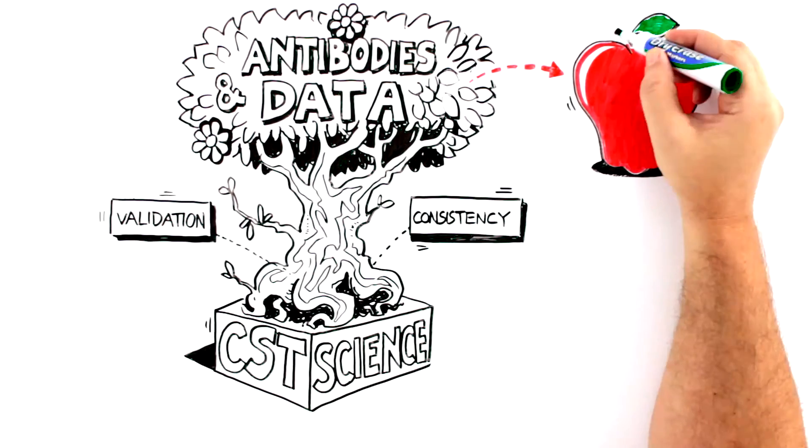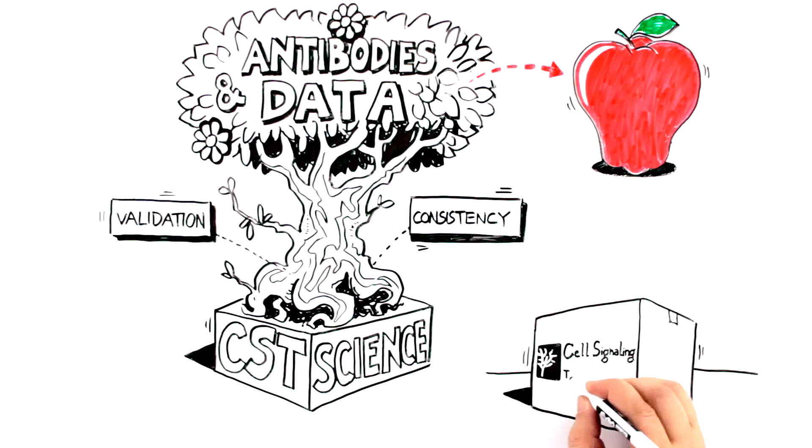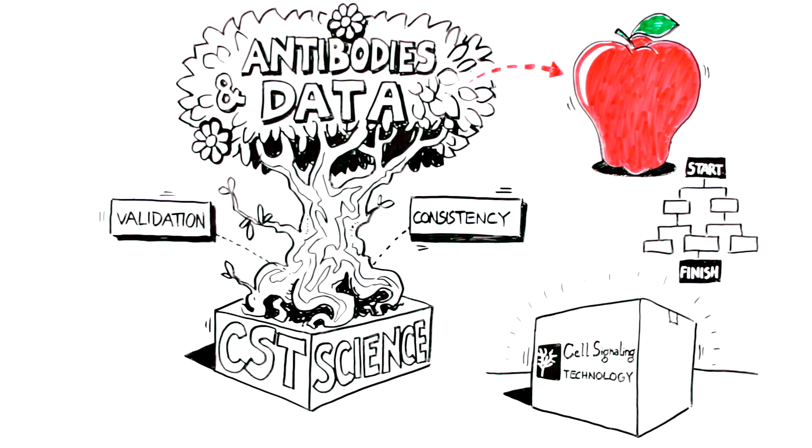Finding the right fruit to nurture into an amazing product is not easy, but the search is well worth it. In the next few minutes, we'll follow that rigorous process from start to finish, tracing the development of one particular antibody, Vimentin D21H3 XP Rabbit monoclonal antibody.